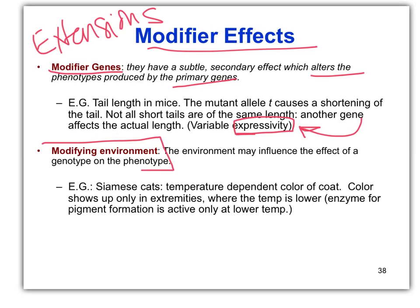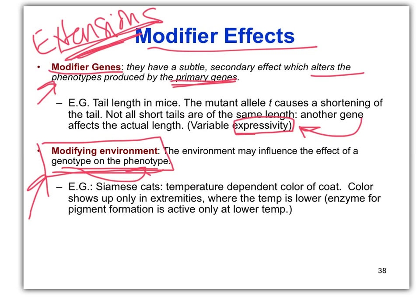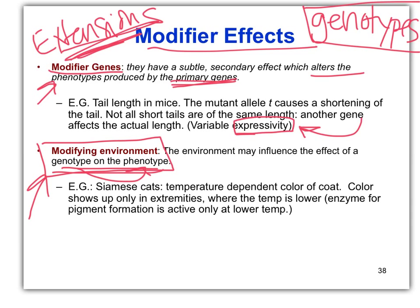There's also a modifying environment. We're going to concentrate on this one for our example, so don't worry too much about modifier genes — just be aware that it can happen, and there's probably something in the book as well. A modifying environment is where the environment influences the effect of the genotype on the phenotype. All of these extensions are the same genotype — genotypes never change. They are what they are, but the phenotype is what's variable.